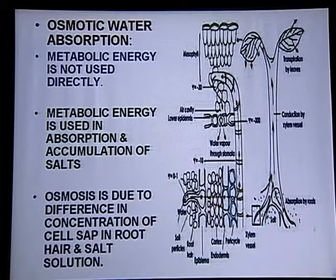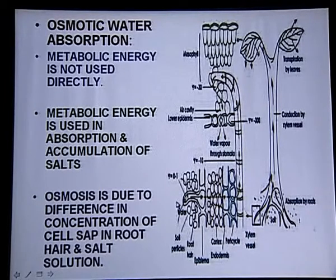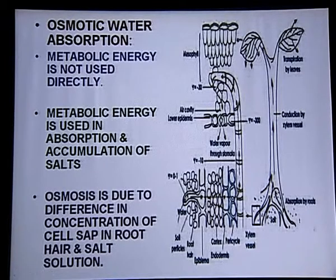Looking at the diagram, the root hair is surrounded by soil particles and soil water. Water outside is more (solvent), and inside the root hair cell sap the water concentration is less. So soil water moves into the root hair. From there it moves through cortex, endodermis, pericycle, and finally into the xylem. When water absorption occurs through the process of osmosis, that is called osmotic active water absorption.